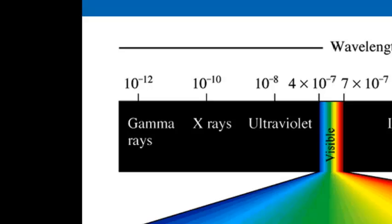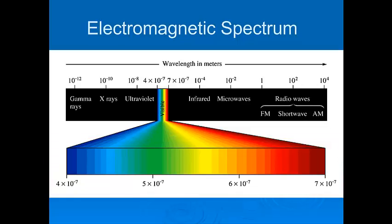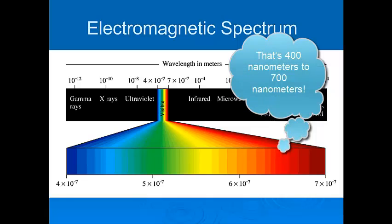Once we get to 4 times 10 to the minus seventh meters, we reach an area of the spectrum that our eyes have evolved to be sensitive to, and we call that the visible light spectrum. It is pretty much stuck right in there from 4 times 10 to the minus seventh meters all the way up to 7 times 10 to the minus seventh meters. It's not a very large range.